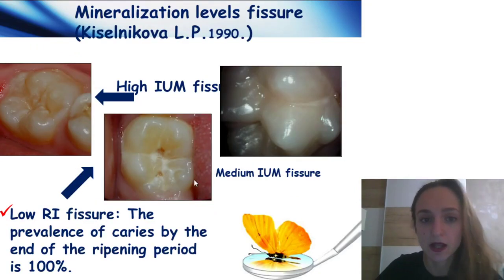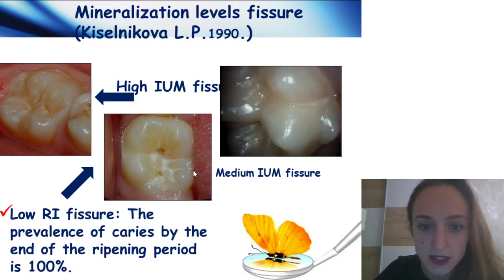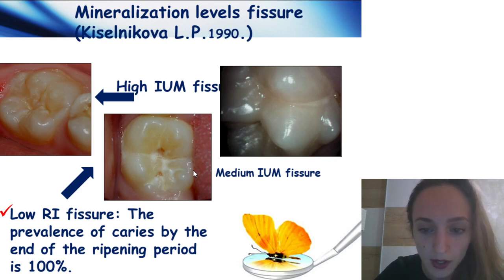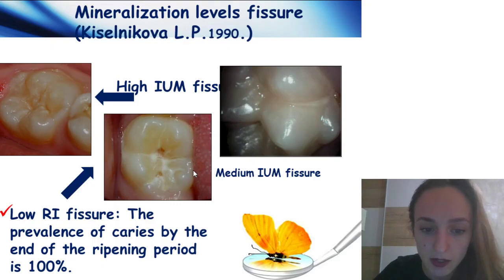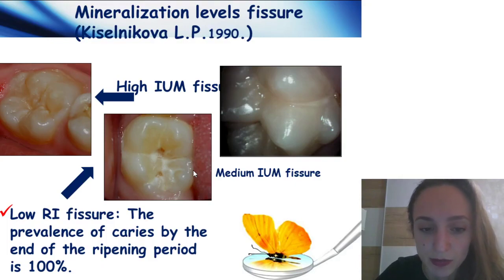This slide demonstrates the mineralization level of fissures — high level, low, and medium. The prevalence of caries by the end of the ripening period is 100%.